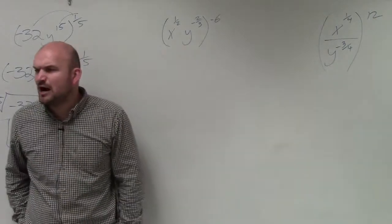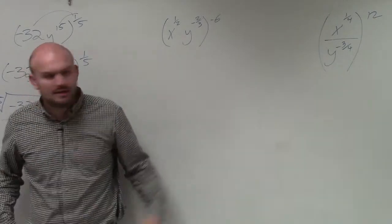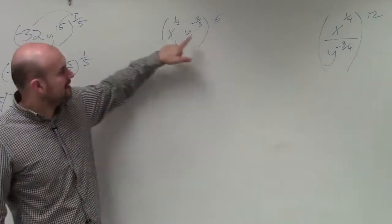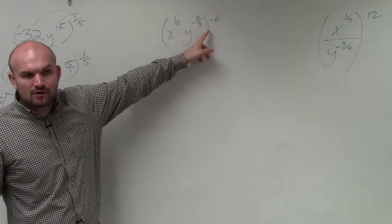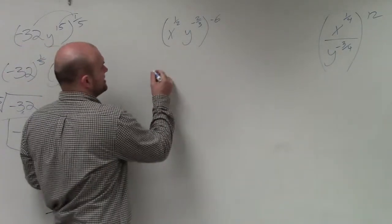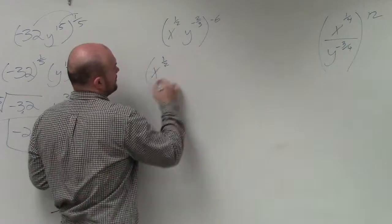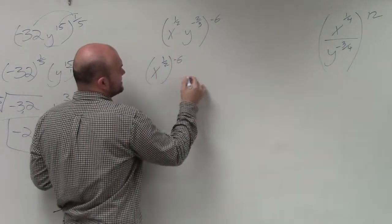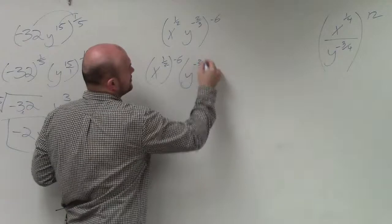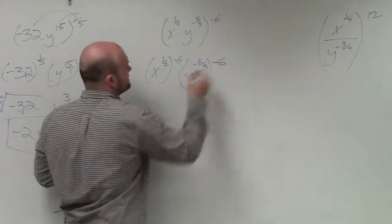The first thing I'd recommend is let's use the power rule again. So the power rule states, again, when you have a product raised to a power, you distribute that. So that's going to be x to the one-half raised to the negative six, times y to the negative two-thirds raised to the negative six.